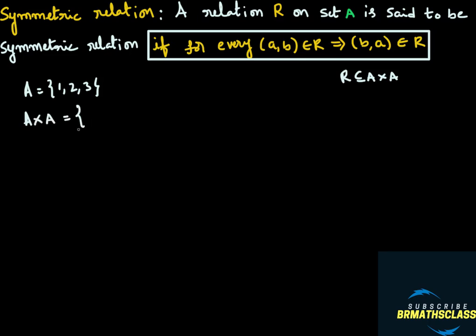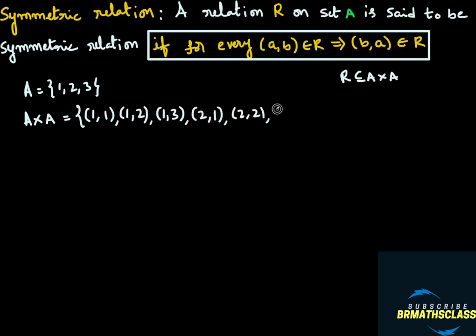By this time you know how to write A cross A. First, you take one element in set A and pair with all the elements of set A. That is, ordered pairs (1,1), (1,2), (1,3). Now you take the second element and pair with all elements: (2,1), (2,2), (2,3). Now you take the third element: (3,1), (3,2), (3,3). So now I have written A cross A.